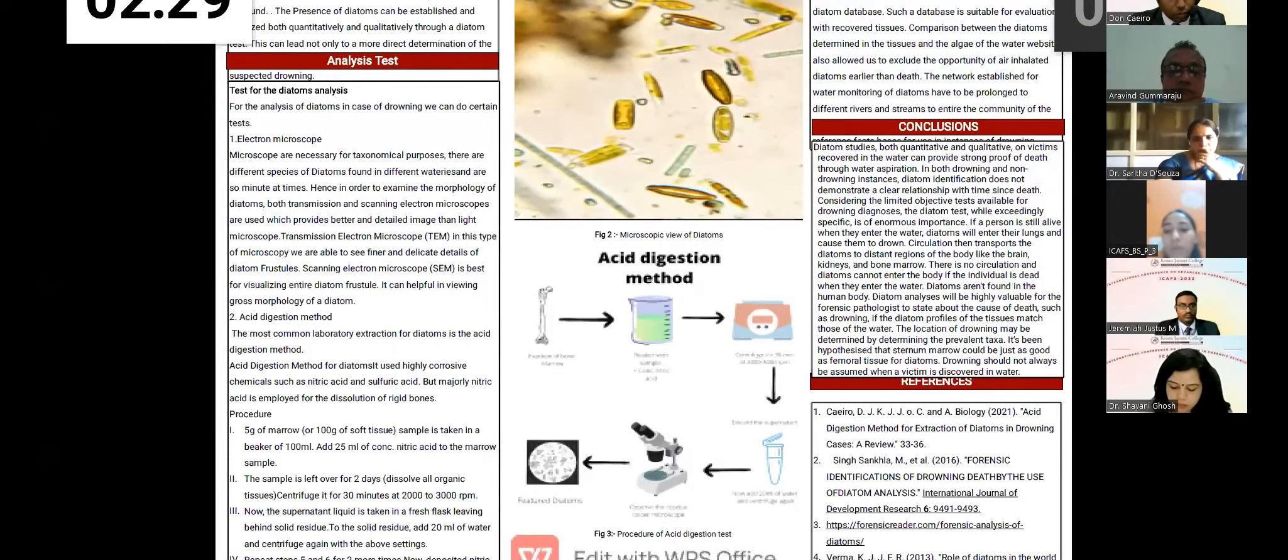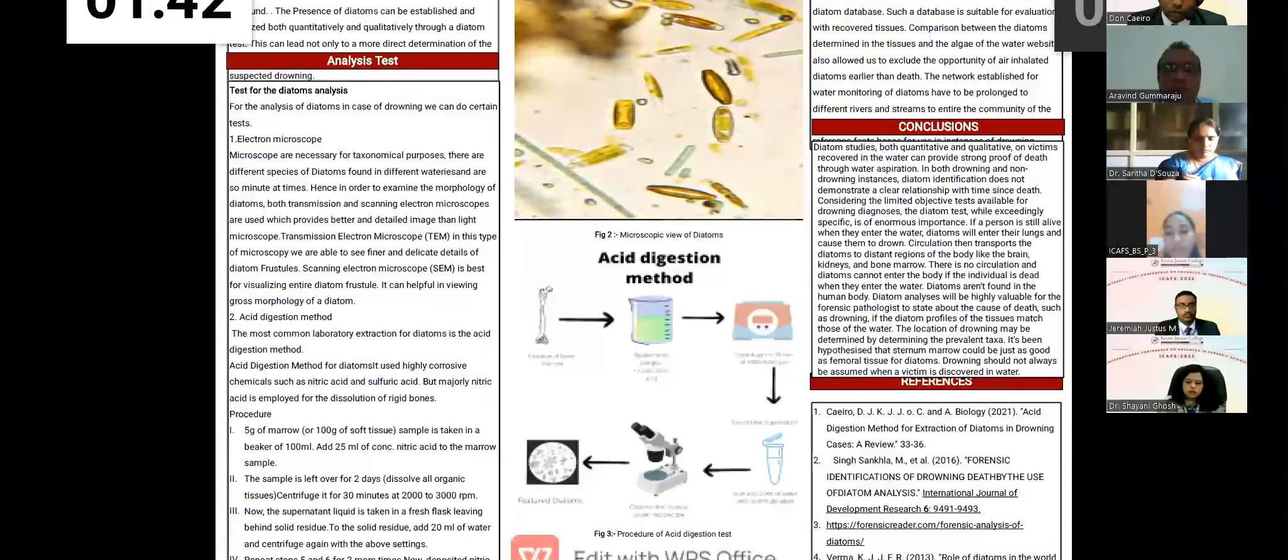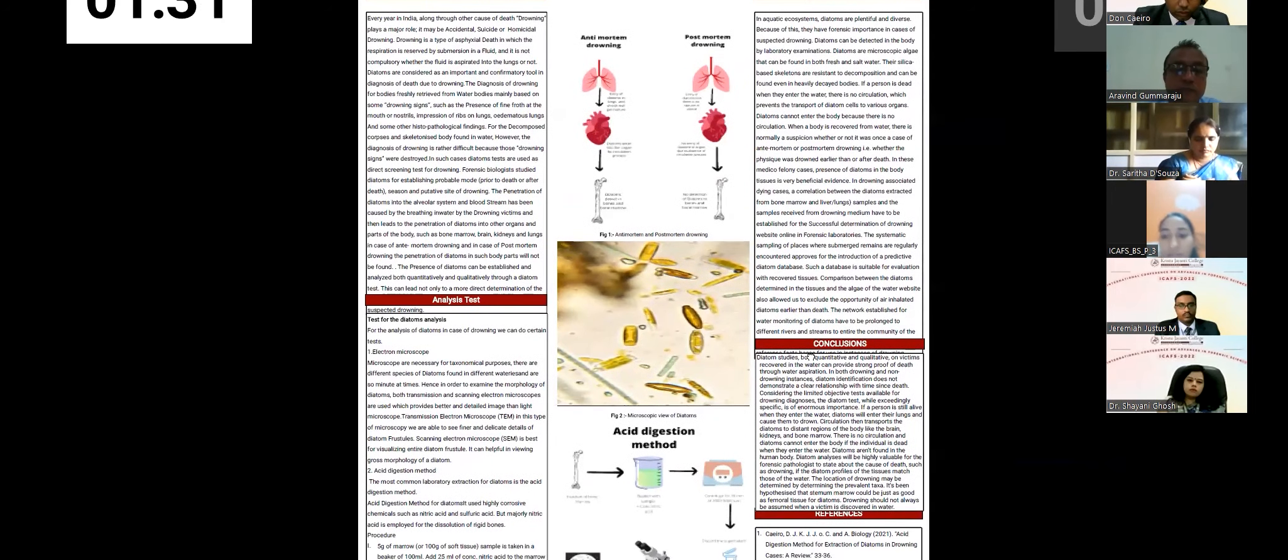We can also use acid digestion methods, which is shown in the figure, in which we can use the bone marrow of femur bone or sternum, because they are the best for identification of diatoms. So first we take the bone marrow, then we use nitric acid. Five grams of bone marrow is taken in a beaker, and concentrated nitric acid is used. The sample is left over for two days, and centrifugation is done for 30 minutes at 2000 to 3000 RPM. Now the supernatant liquid is taken out from the flask leaving behind the solid residue. Then we add 20 ml of water and centrifuge again and again. And then we repeat this step for five, six times, and then we analyze the sample in microscope, so we can identify the featured diatoms in the test.